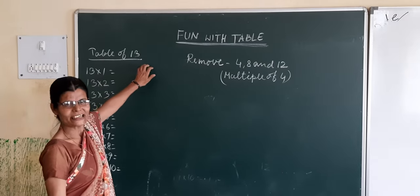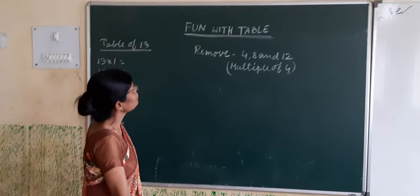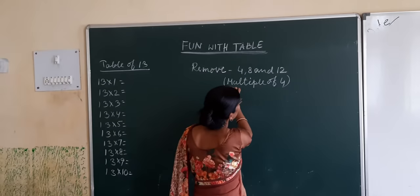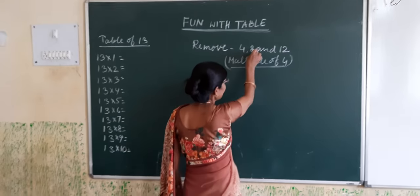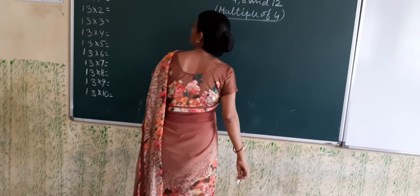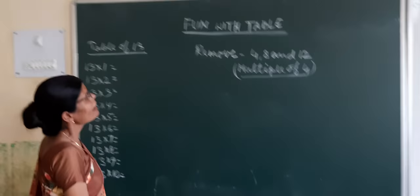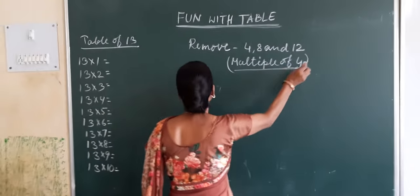Now we have 13. We will remove the multiples of 4. The multiples of 4 are 4, 8, and 12. Now write the numbers except the multiples of 4.